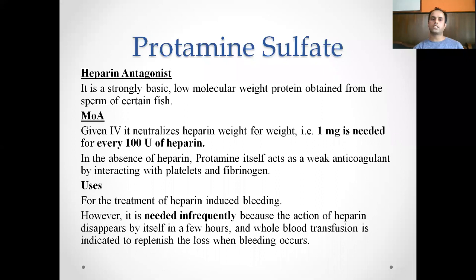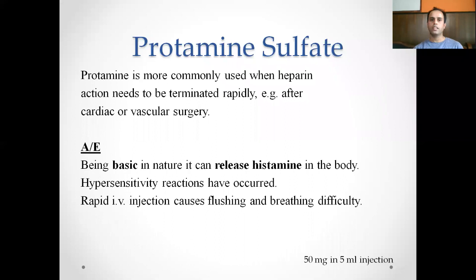Protamine sulfate is a strongly basic low-molecular-weight protein obtained from the sperm of certain fish. It is given intravenously to neutralize heparin — one milligram of protamine sulfate neutralizes 1,000 units of heparin. In the absence of heparin, protamine itself acts as a weak anticoagulant by interacting with platelets and fibrinogen. It is used for treatment of heparin-induced bleeding but is needed infrequently since heparin's action disappears within a few hours. It is most commonly used after cardiac or vascular surgery. Rapid IV injection can release large amounts of histamine, potentially causing hypersensitivity, flushing, and breathing difficulty.